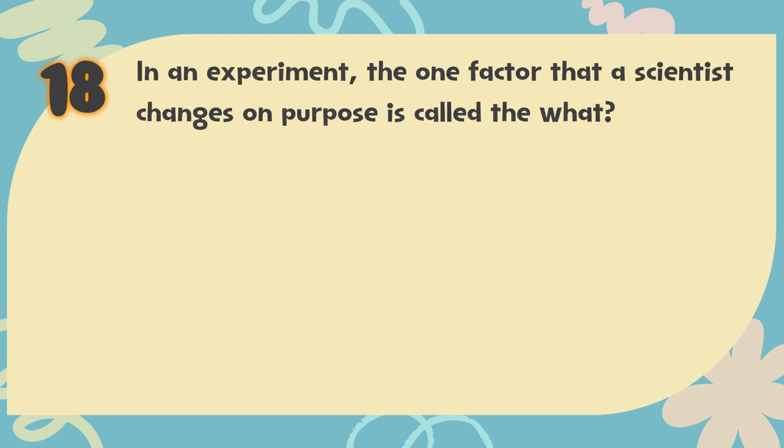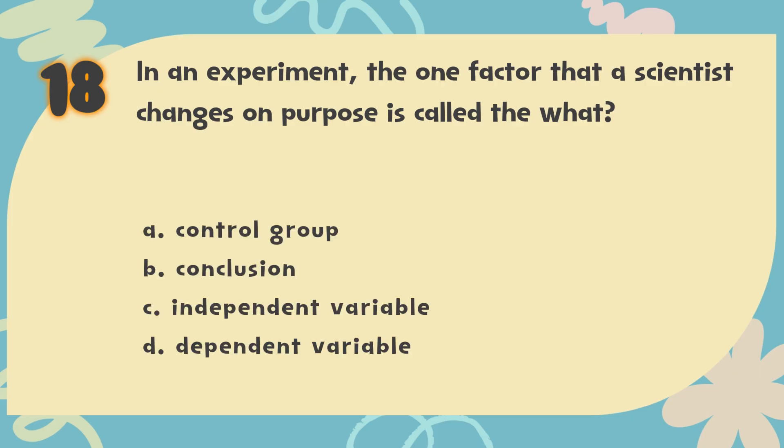Number 18. In an experiment, the one factor that a scientist changes on purpose is called what? The choices are: A. Control group, B. Conclusion, C. Independent variable, D. Dependent variable.